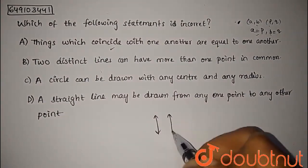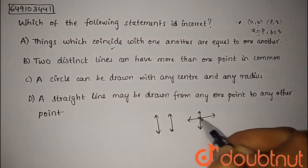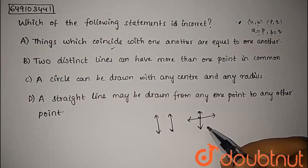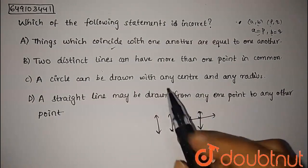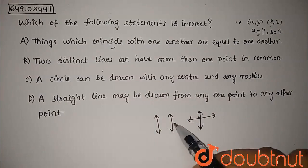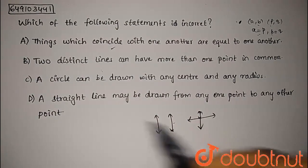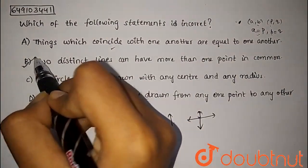This is the distinct lines' definition. Two distinct lines can have more than one point in common. We can say that more than one point is not possible. Therefore, this statement is wrong and incorrect.